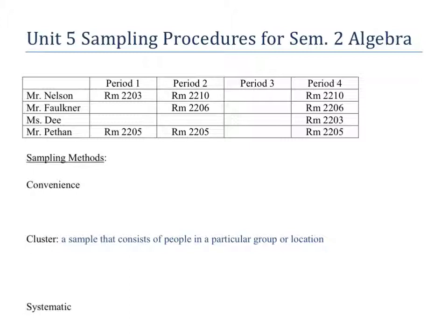A cluster sample means you go to a room and ask them. How you define the cluster can be as big as the room, or say row one, or a group of people closest to the door. They are bound together because you said you're going to choose a group of people. You can also say you're going to walk in a room and ask people with red shirts — that's a cluster because they're bound by something physical.